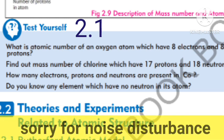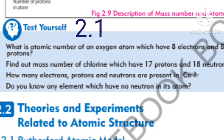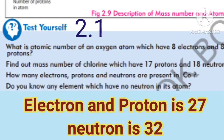The third question is: how many electrons, protons, and neutrons are present in cobalt? The answer is: electrons 27, protons 27, and neutrons 32.